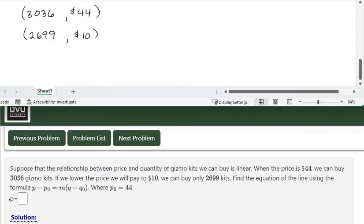Now notice that they have it solved for p. I'm going to need the slope. The slope will be y2 minus y1 over x2 minus x1, so 10 minus 44 over 2,699 minus 3,036. That's negative 34 over negative 337.